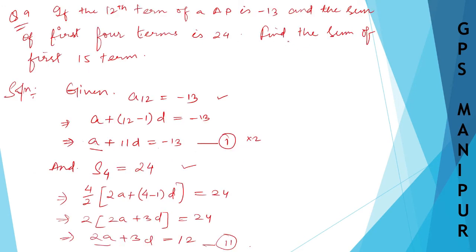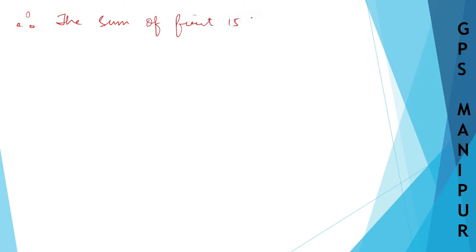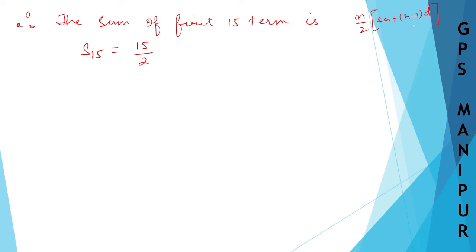Now the question says find the sum of the first 15 terms, so we need to find S15. Using the formula: S15 equals N divided by 2 times 2A plus N minus 1 times D, where N is 15. I hope you remember the formula.